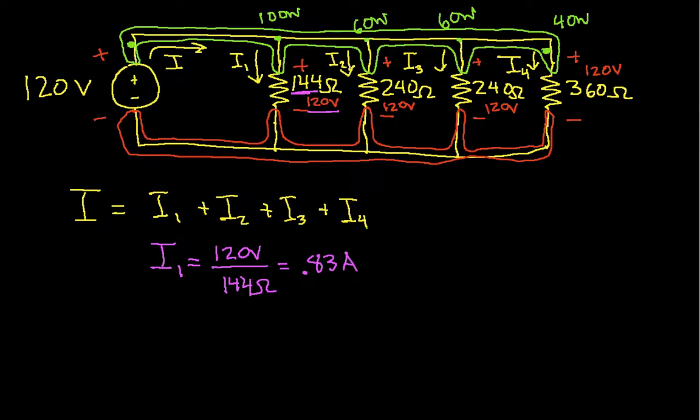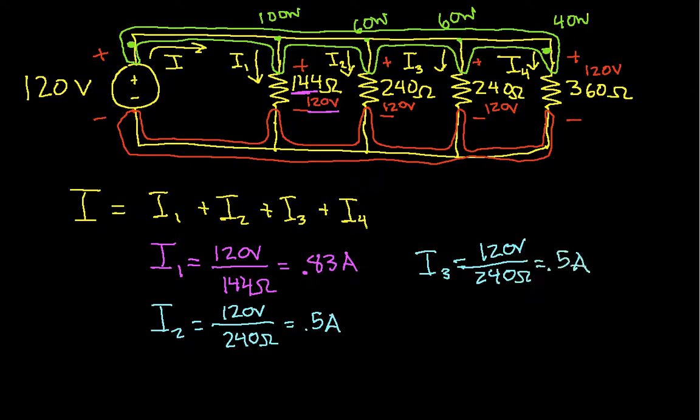Similarly, I2 will be 120 volts over 240 ohms, which is 0.5 amps. I3 will be 120 volts over 240 ohms, which is 0.5 amps. And I4 will be 120 volts over 360 ohms, which is 0.33 amps.